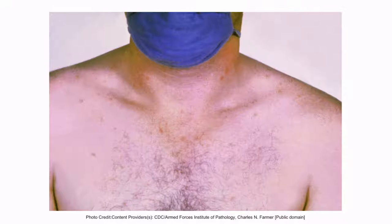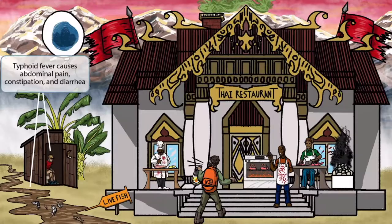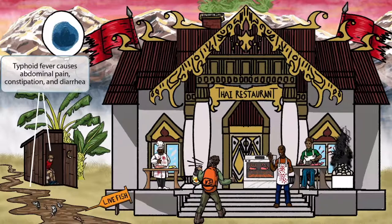This is an image of the rash associated with typhoid fever. Notice that this patient has flat, rose-colored spots on his neck, shoulders, and chest. As you can see, this restaurant isn't exactly very sanitary, which is why they have an outhouse nearby for all the sick travelers. The guy sitting on the toilet represents constipation, and the muddy brown river next to the outhouse represents diarrhea. Together, these symbols should help you remember that typhoid fever causes abdominal pain, constipation, and diarrhea.